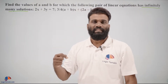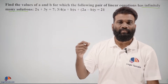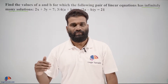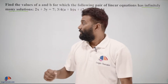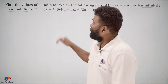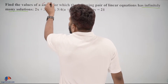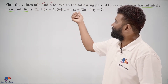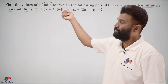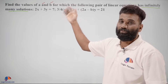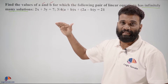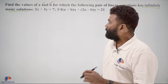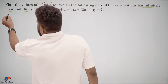Which means we have a condition: a1 upon a2 is equal to b1 upon b2 is equal to c1 upon c2. By using that condition, we will find the A value and B value, since we have two variables A and B.